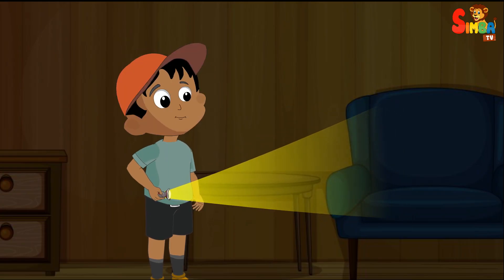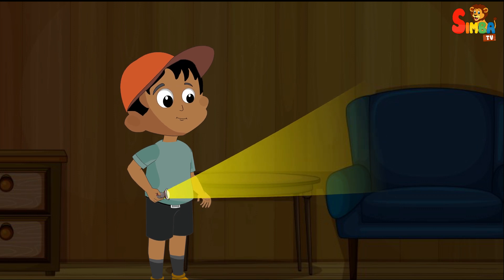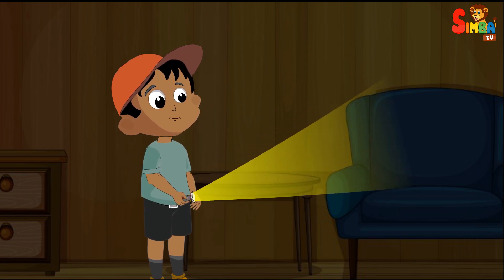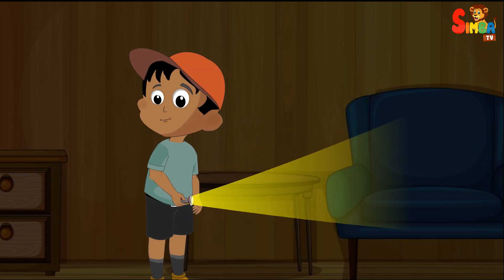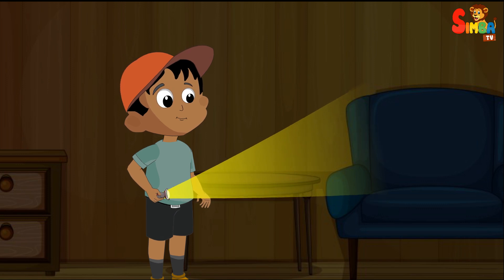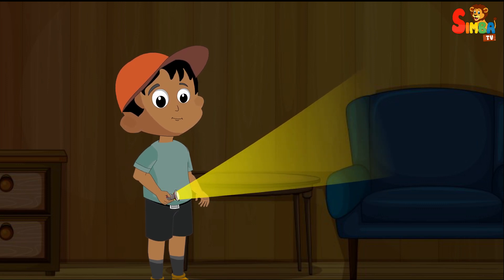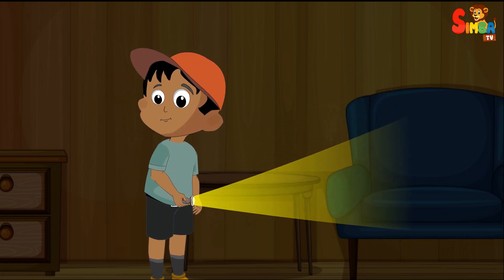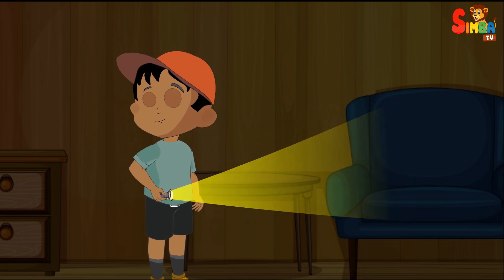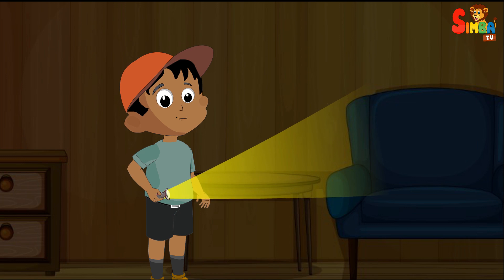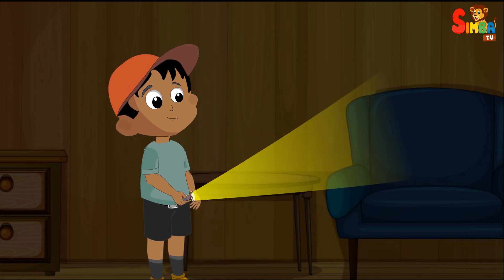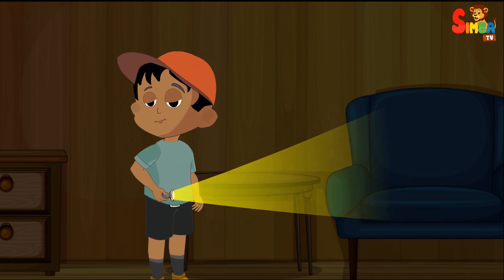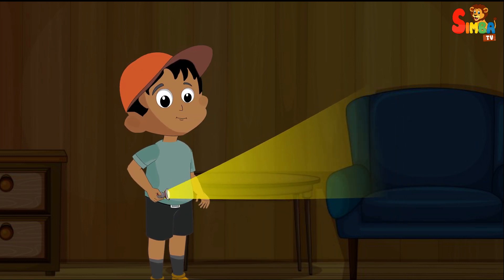Availability of light: In complete darkness, there is no light available for our eyes to detect. Without light, there is nothing for our photoreceptor cells to detect and transmit to the brain for processing. Therefore, we cannot see in such conditions.